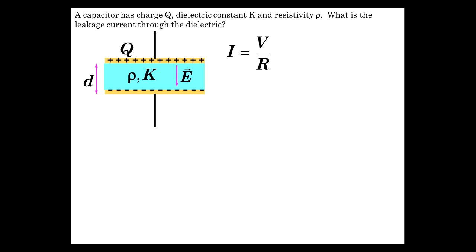Probably what jumps right out at you is that voltage is electric field times distance. We can do better than that. The electric field is sigma over epsilon. So we have sigma over epsilon d over R.